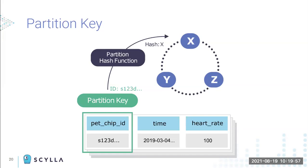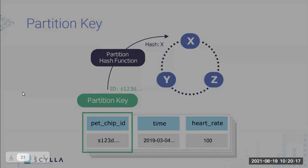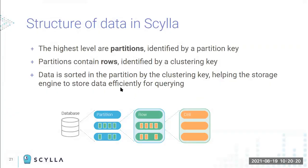Each node in Scylla and Cassandra owns what is called a range of tokens. The entire cluster is split into a token ring, and this function lets the database know which node — and in Scylla, even which core — should handle each piece of data. A keyspace holds tables, a table is split into partitions, each partition is located on a specific subset of nodes, each partition is composed of rows, and each row has cells that hold the actual information.